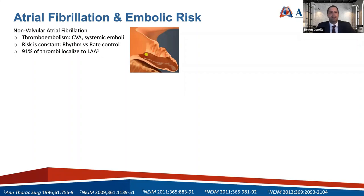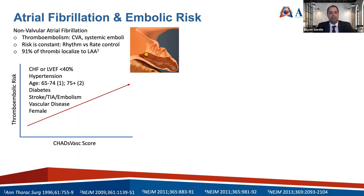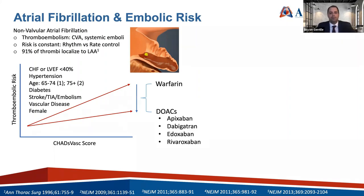In patients without rheumatic mitral valve disease, 91% of thrombi localize to the left atrial appendage. This comes from a seminal autopsy study from the mid-1990s. We all know that the risk of thromboembolism increases as the CHADS-VASC score increases, and we can reduce this risk with oral anticoagulants, whether that's warfarin or the direct oral anticoagulants.